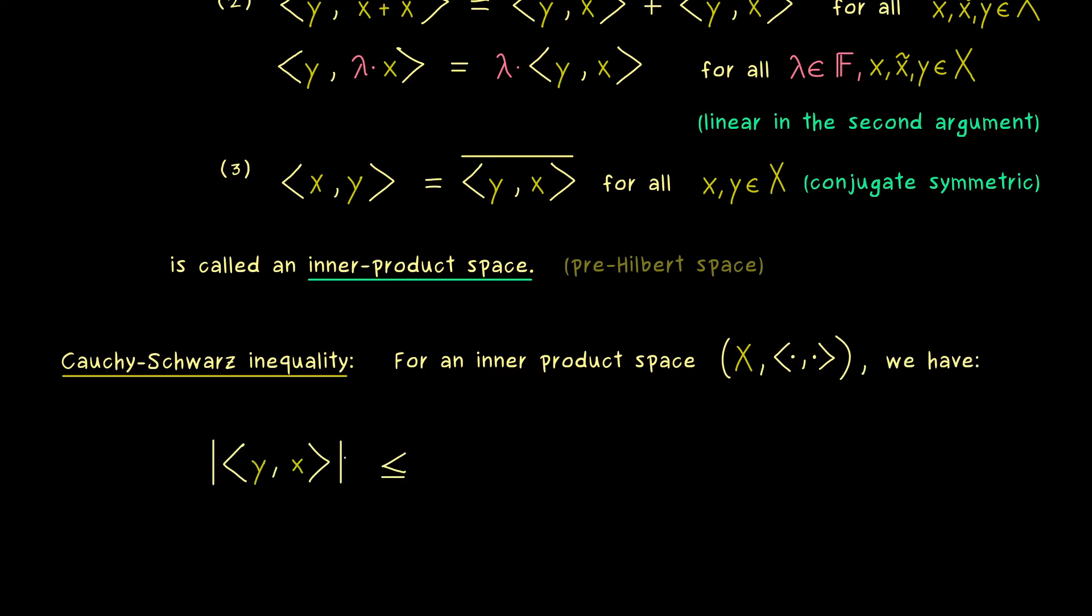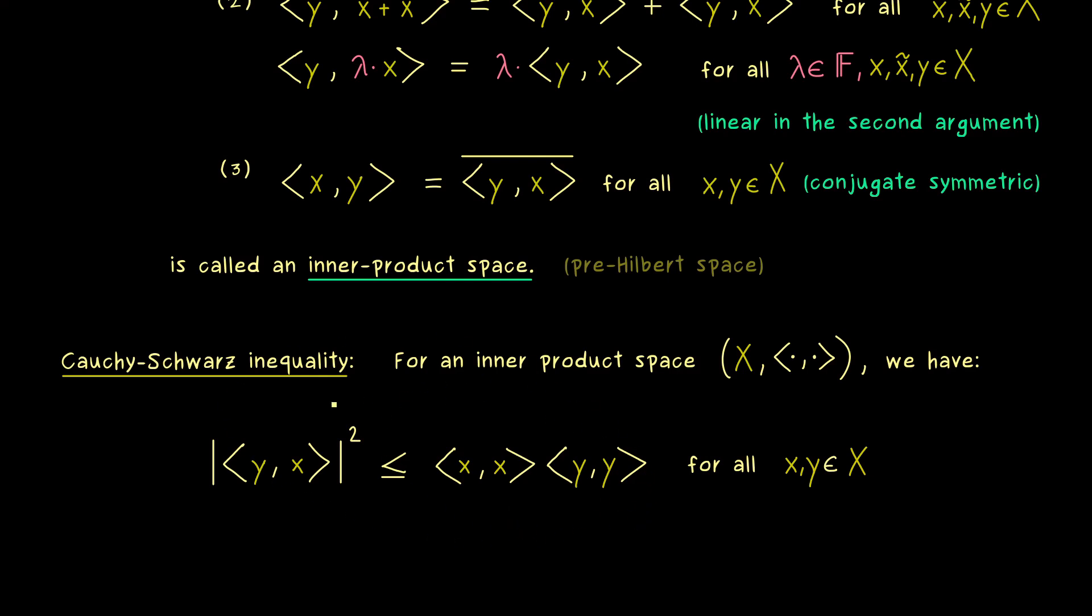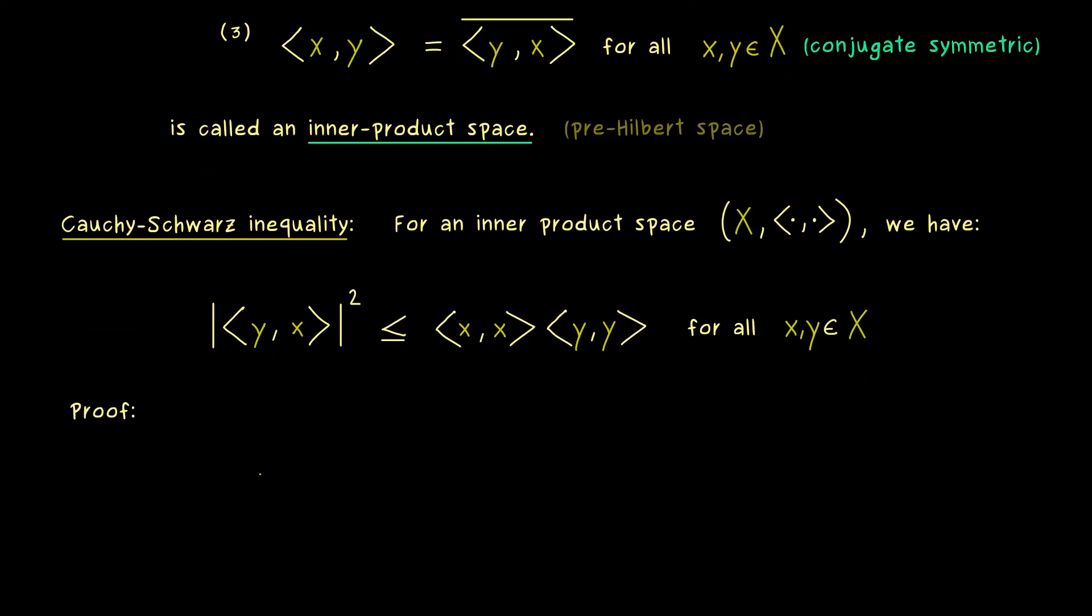For any inner product space X, we have this inequality. So we take two vectors x and y in the inner product, and we look at the result in the absolute value squared. This real number we can estimate by the inner product where just x is inside, and with the inner product where just y is inside. By the properties of the inner product we know that these two inner products are always non-negative real numbers as well. So the Cauchy-Schwarz inequality simply tells us the relation between this product and the inner product of x with y.